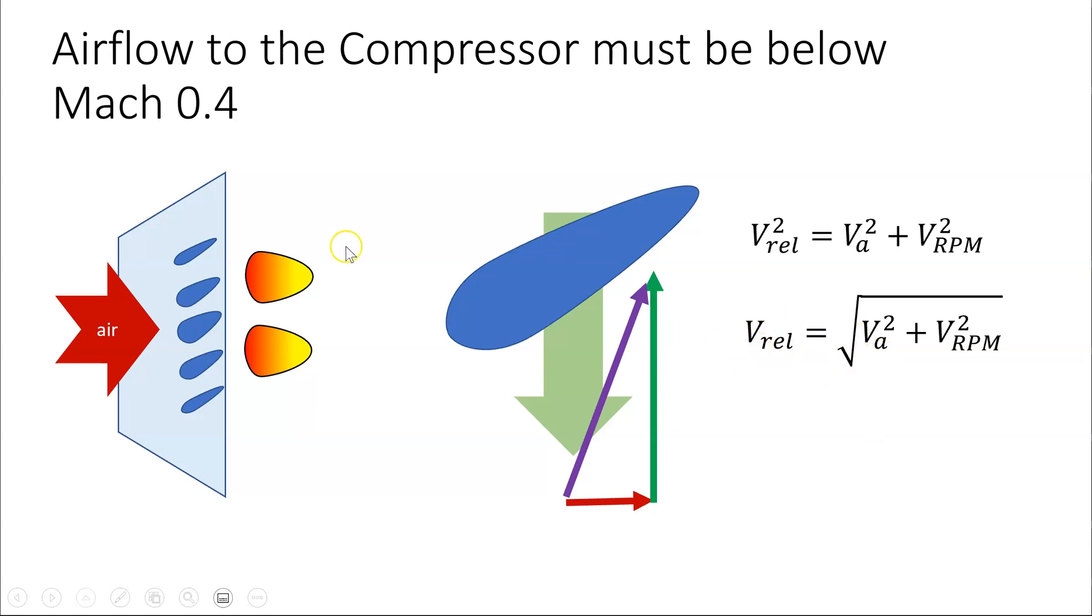And in order that the air flow over the compressor blades, so that this vector here doesn't reach the speed of sound, Mach 1, we have to ensure that this velocity here, V_a, is below Mach 0.4 under all stages of flight.